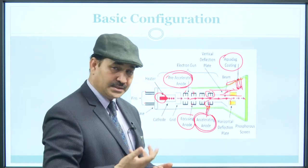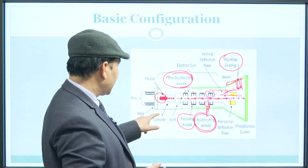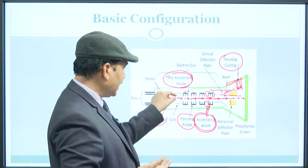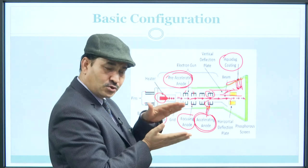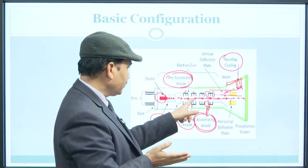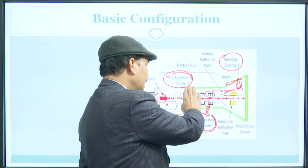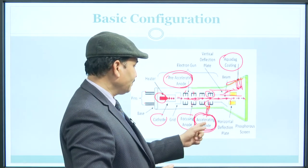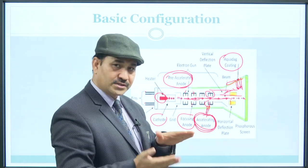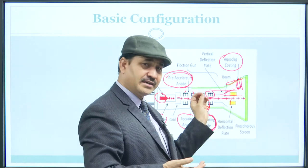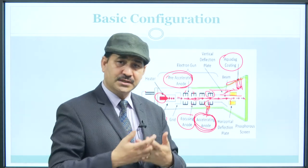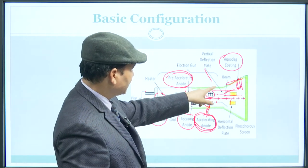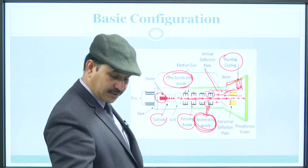To summarize the basic components: the cathode ensures electron emission with the help of the heater; the grid navigates and focuses a certain section of electrons; the focusing anode ensures major focus so electrons are not diverted; the accelerating anode ensures reasonable speed so electrons can strike the screen; the horizontal deflection plate ensures horizontal movement; and the phosphorous screen is where the electrons strike to produce a luminous spot and a pattern. The vertical and horizontal deflection plates have already been discussed.